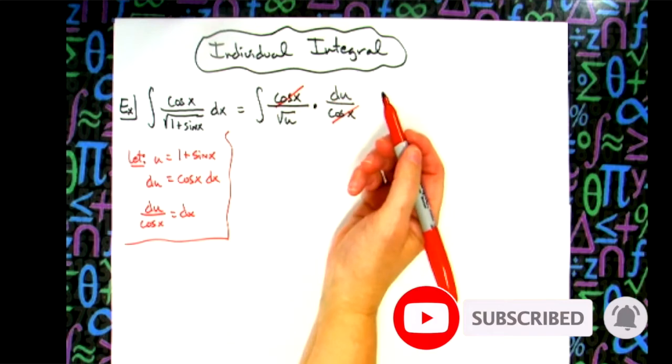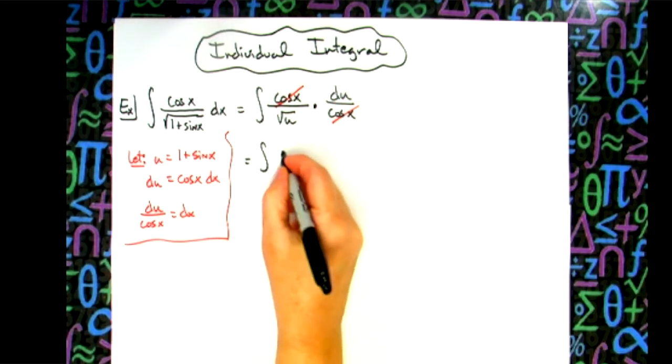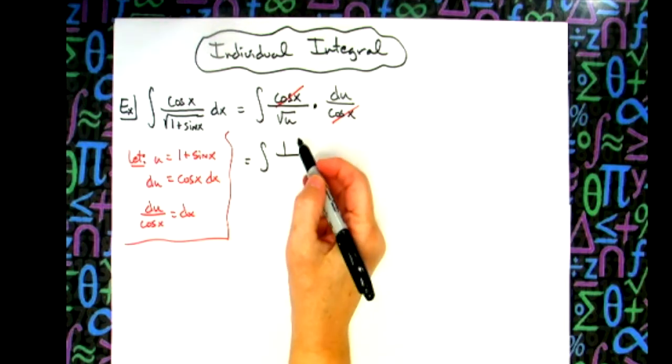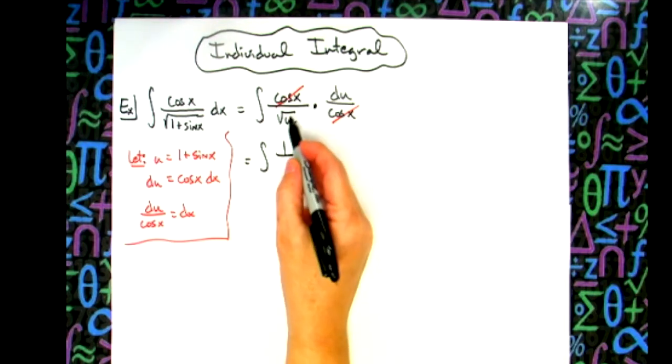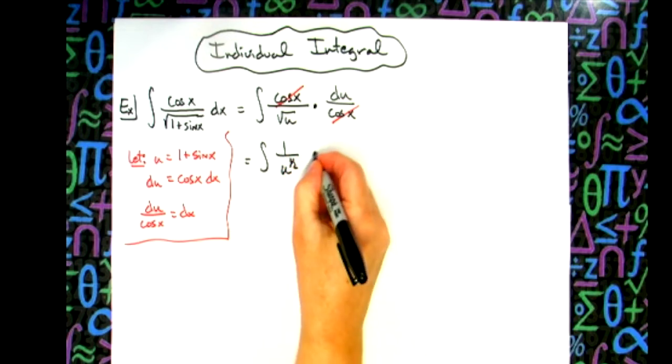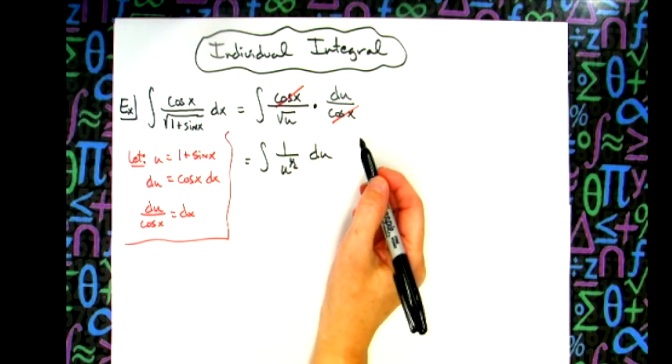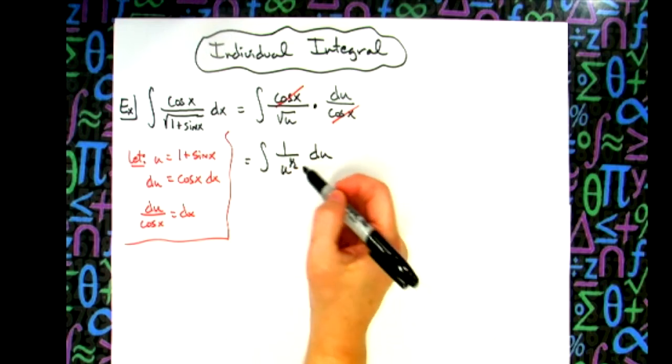Now at that point, those cosine x's are going to cross out really nice. So then we'll have the integral of 1 over—now let's go ahead in this same step, taking that radical U and turning it into exponential form. So U to the 1 half and then du. We have an integral now all in terms of U, so I can start to go through my process to integrate.